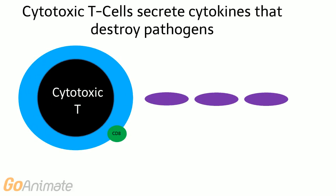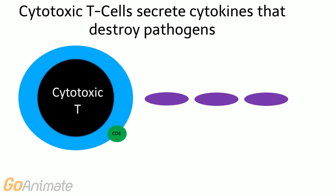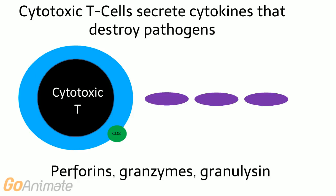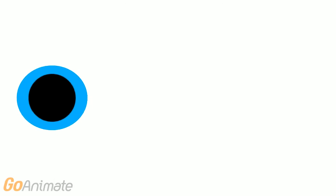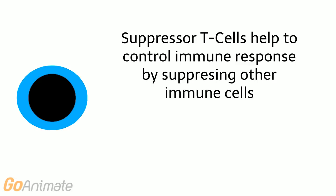Cytokines from cytotoxic T cells work to destroy pathogens. These include perforin, granzymes, and granulacin. Suppressor T cells work to suppress the immune response, which can get out of control.